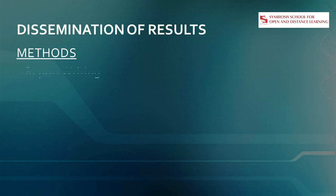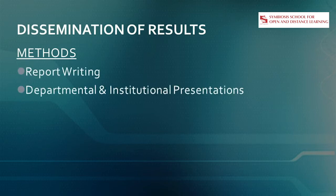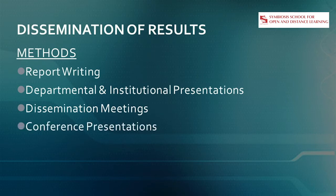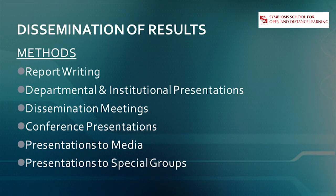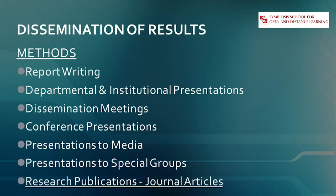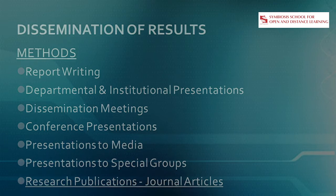For the dissemination of the results and findings, you have to write papers. There are several ways to disseminate: you can write a report, have departmental and institutional presentations, participate in dissemination meetings, go to conferences, make presentations to the media, or present to key stakeholders. However, the most important part of dissemination remains research publication — and that too in peer-reviewed journal articles. Today's talk will focus on research publications in peer-reviewed journals.